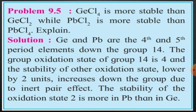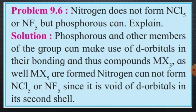Let's move to the next numerical. Nitrogen does not form nitrogen pentachloride NCl5 or nitrogen pentafluoride NF5, but phosphorus can. The question is: nitrogen does not form halogen compounds in pentachloride or pentafluoride form but phosphorus can — we are supposed to explain this statement. Here is the solution.